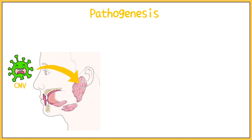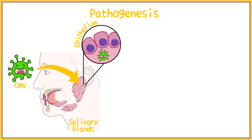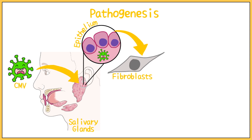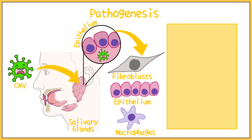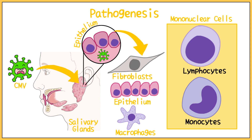Let's discuss the pathogenesis of CMV. The virus establishes itself in the salivary glands, more specifically the salivary epithelium. From here, it establishes a persistent infection in fibroblasts, epithelial cells, and macrophages. When the virus becomes latent, it moves into the mononuclear cells, i.e. the lymphocytes and monocytes.